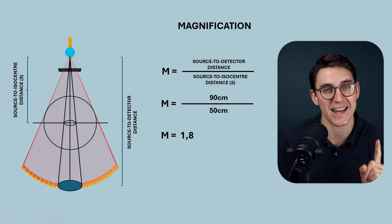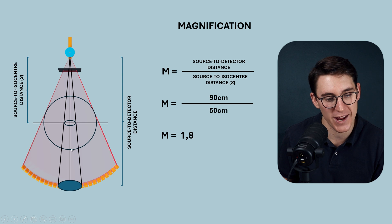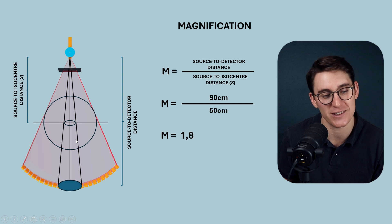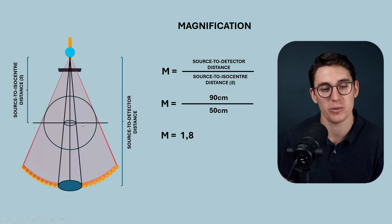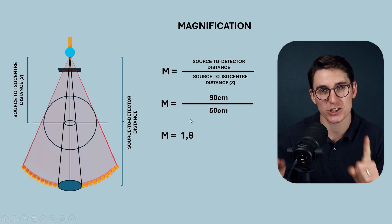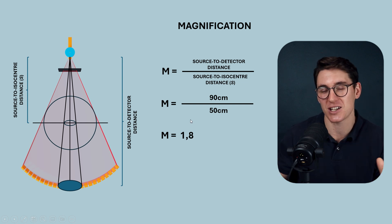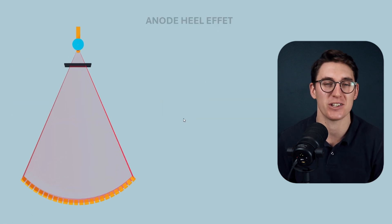Importantly, the magnification applies at the isocenter. It changes depending on where you are within the patient, and we'll look at that specifically when we examine image quality. But it's important to realize that because of the diverging beam, we get magnification.